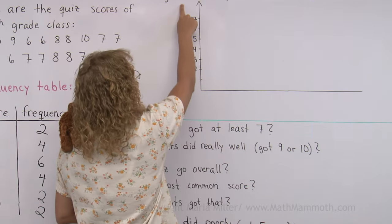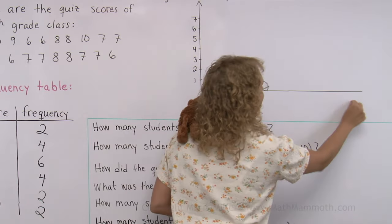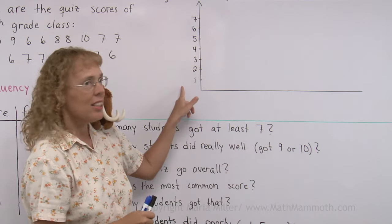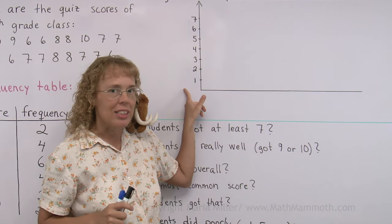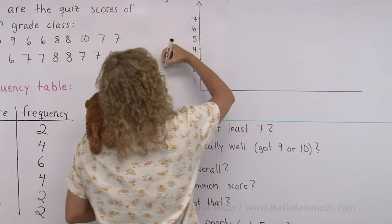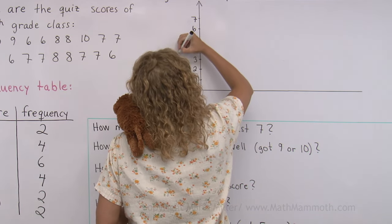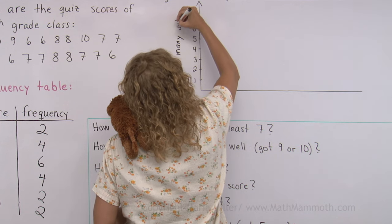And it has a line or an axis going up this way and another axis going this way. Now, these numbers here are for the frequency or for how many students. So, I could write here how many students or I could write here frequency. I'm going to write this time how many students.